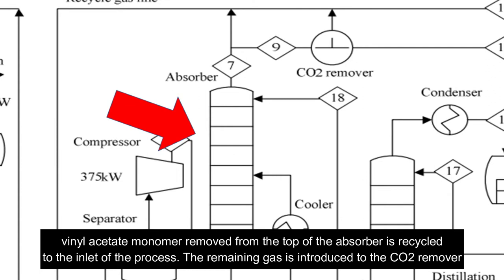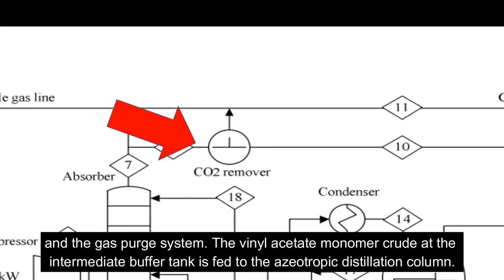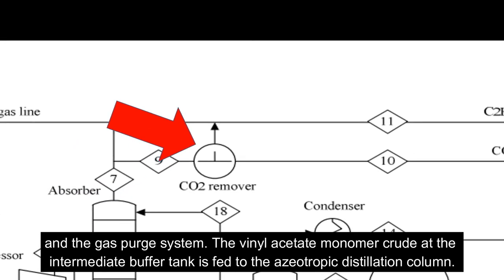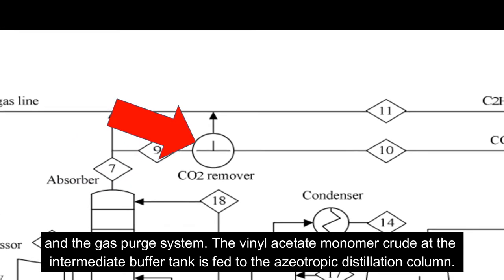The remaining gas is introduced to the CO2 remover and the gas purge system. The vinyl acetate monomer crude at the intermediate buffer tank is fed to the azeotropic distillation column.